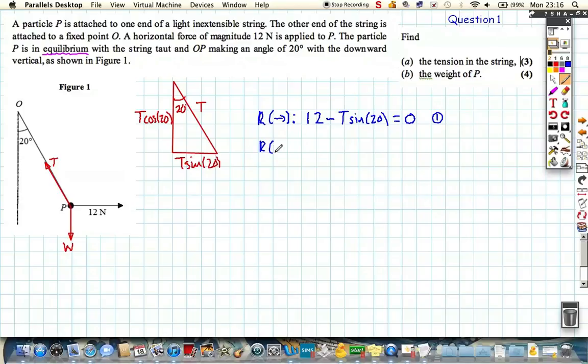And if I do the same thing resolving in the vertical direction with up as a positive sense, I get the vertical component of tension acting up, which is T cosine 20, and our weight of our particle is acting down. No motion, it's in equilibrium, so we'll call that equation number 2. So, I've not even started to solve the question yet, I just drew an accurate diagram, got my forces, and broke them into components which were acting perpendicular or parallel to the other forces.